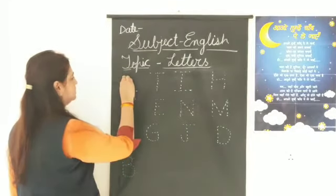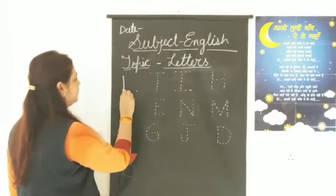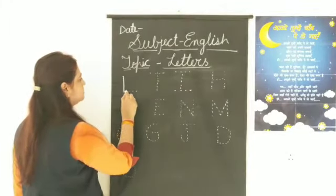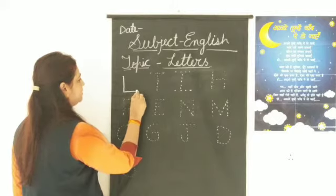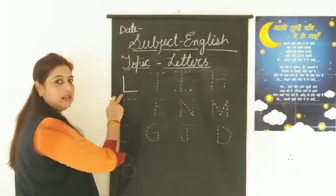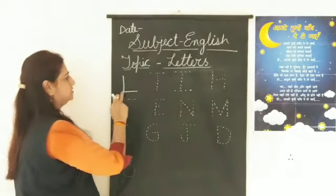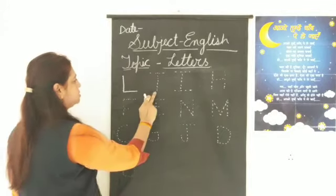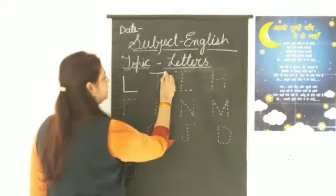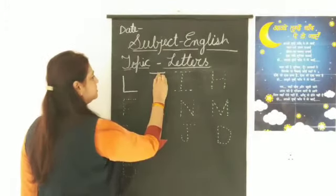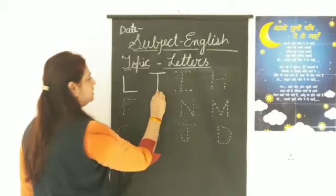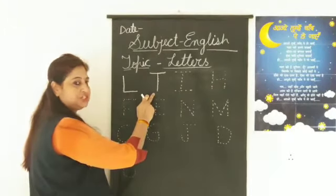L. Standing line, then sleeping line. This is L. T. Sleeping line, then standing line. This is T.